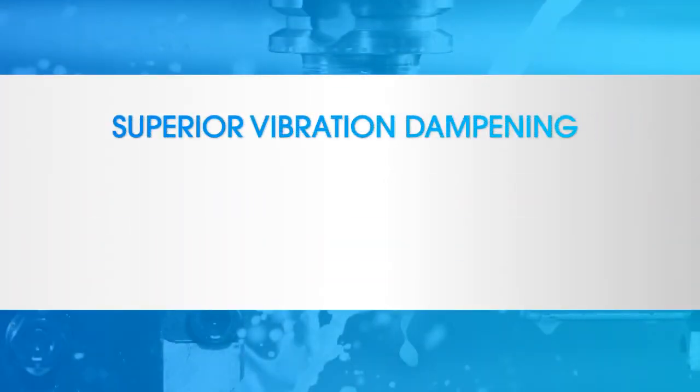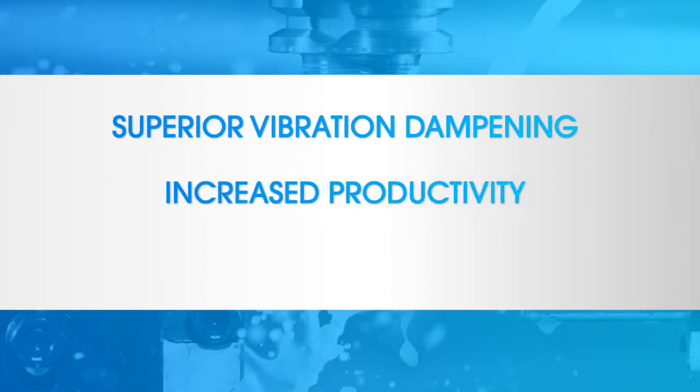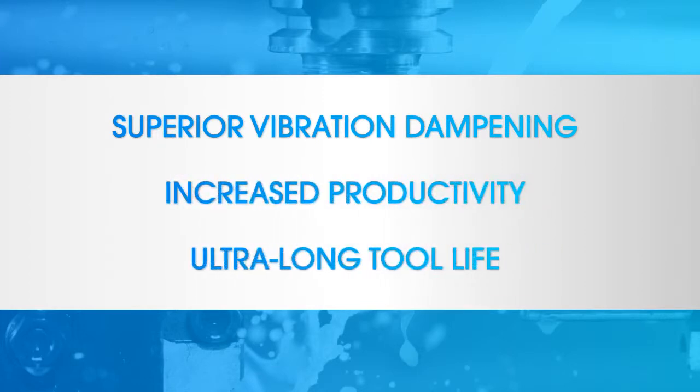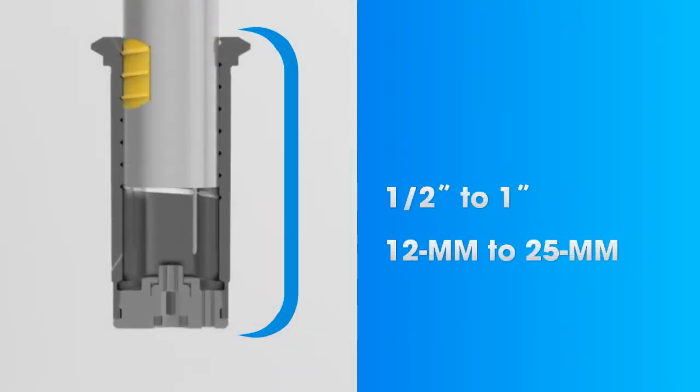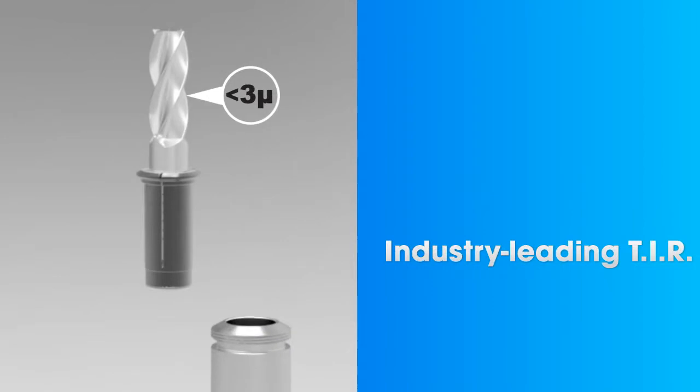Secure Grip provides superior vibration dampening, increased productivity, and ultra-long tool life. It's available in a wide range of tapers, in both inch and metric sizes. And it provides industry-leading TIR. In fact, it comes with a PowerGrip 5-year guarantee.